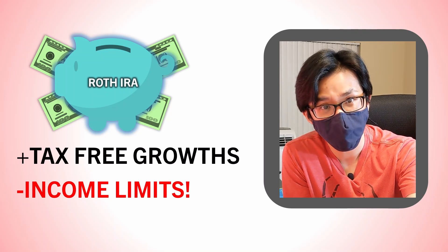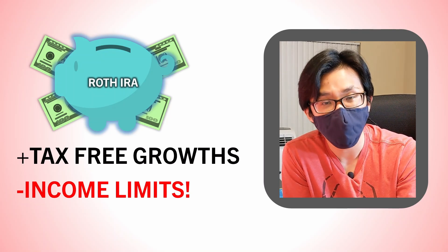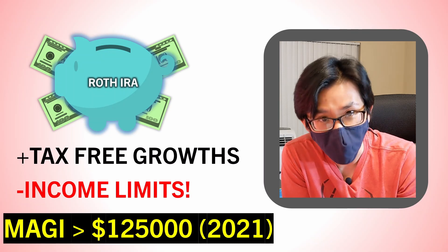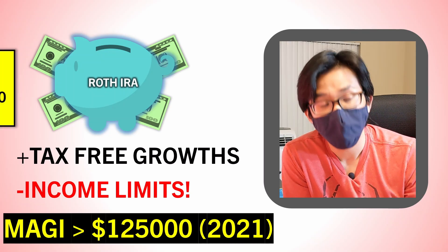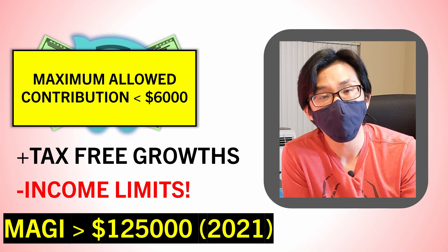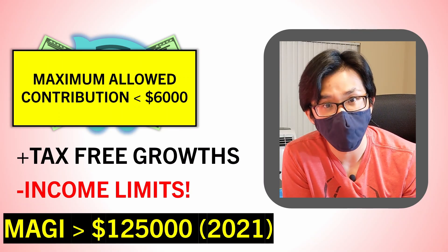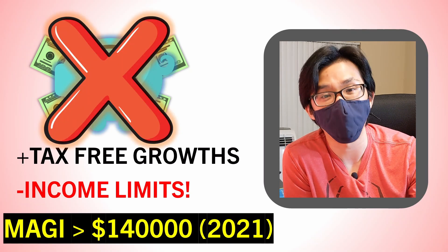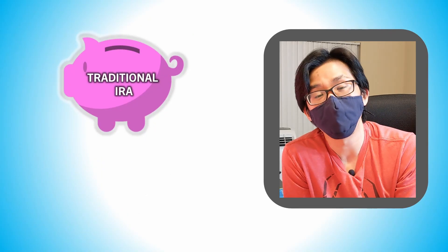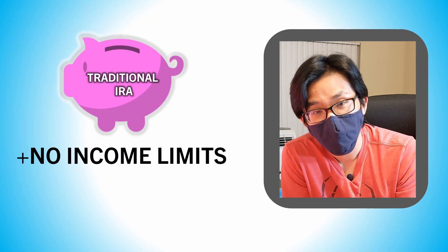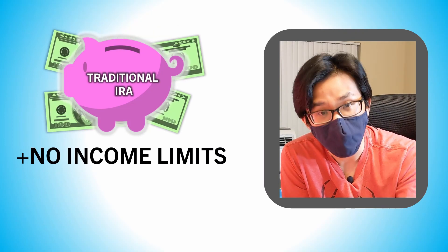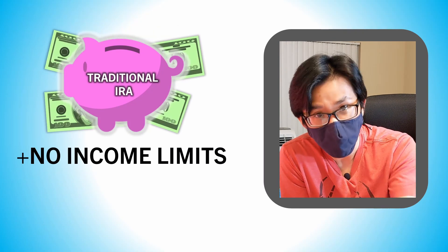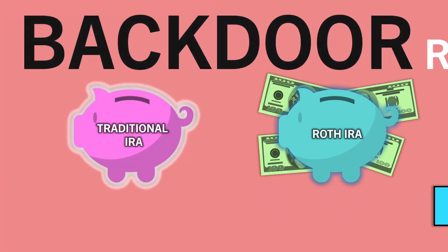For example, in year 2021, if you are filing as a single person and made a modified adjusted gross income, or MAGI for short, of more than $125,000, then you will not be able to contribute the full $6,000 contribution limit into the Roth IRA. If you are above $140,000, you can't contribute to the Roth IRA at all. However, the traditional IRA does not impose such income limits. So no matter how much you earn, you can still contribute to a traditional IRA. As of 2021, the maximum contribution limit is $6,000. Therefore, this tax loophole allows high-income earners to indirectly contribute to a Roth IRA via this method called the backdoor Roth IRA.